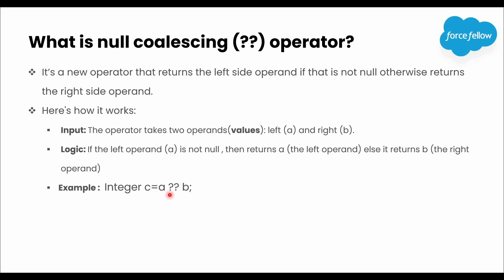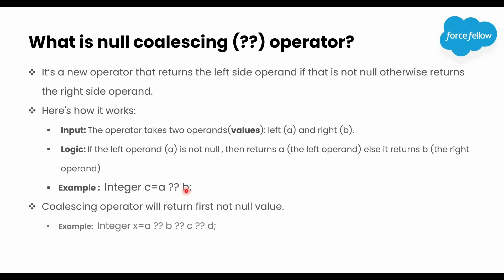In this example, we have two variables A and B. A is on the left side and B is on the right side. To implement the Null coalescing operator, we use a double question mark sign - that double question mark is called the Null coalescing operator. It checks if the left operand is not null, then returns the left operand; otherwise returns the right side operand. It also allows chaining - we can chain multiple Null coalescing operators together in a single expression.